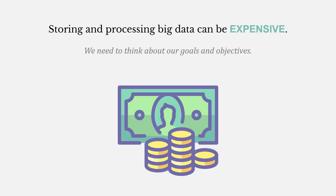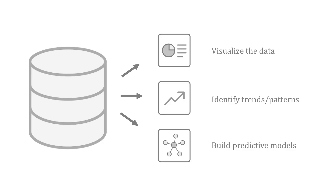Storing and processing big data can be expensive, so as we handle it we need to think about our goals and objectives — what are we trying to accomplish? Typically, when we have big data, we want to do things like visualize it to better understand our business, identify trends and patterns, or build predictive models. We've got to think about whether, if we're going to store and process this big data, we have goals and objectives in mind.